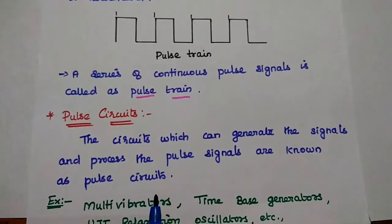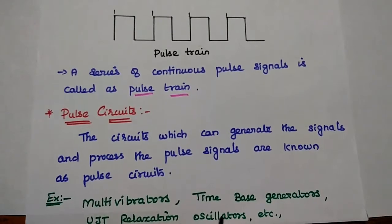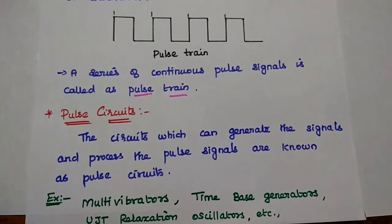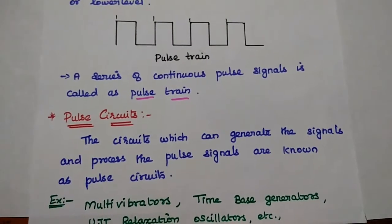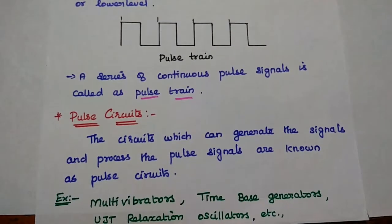Examples of pulse circuits are multivibrators, time-based generators, UJT relaxation oscillator, etc. Let's discuss each type in detail.